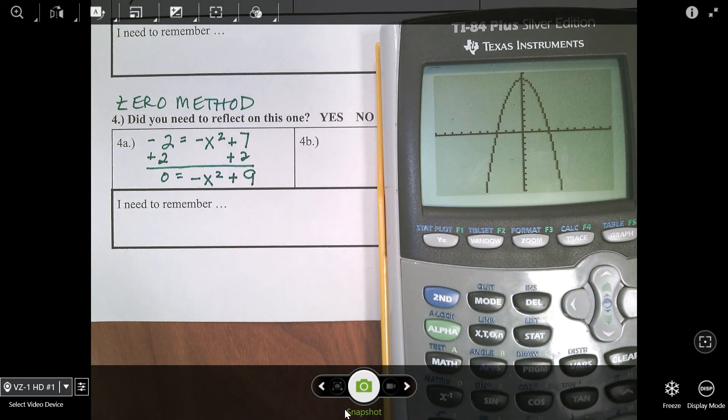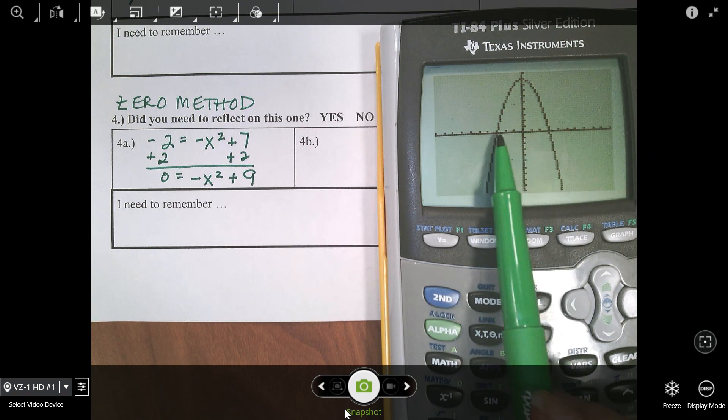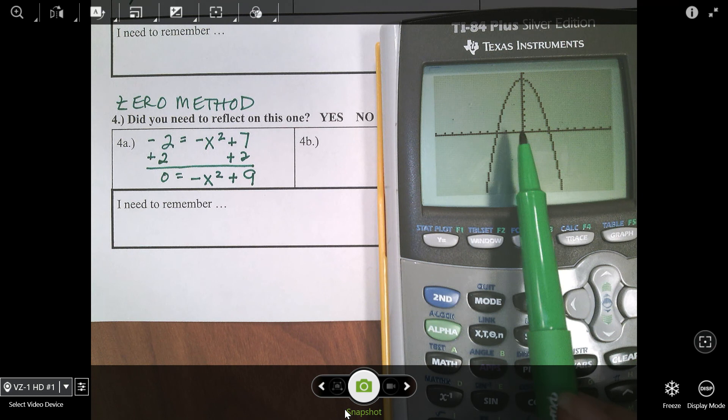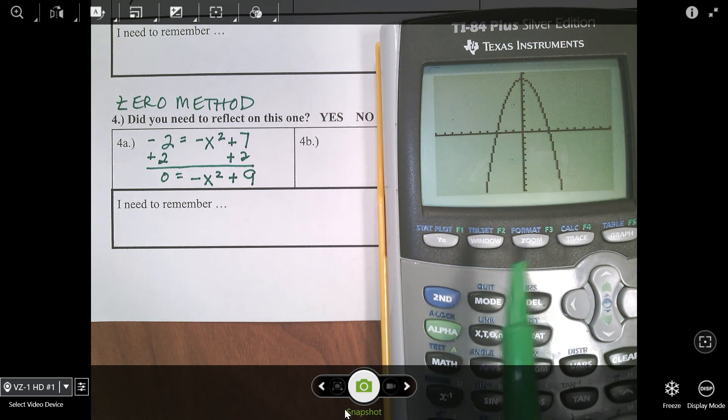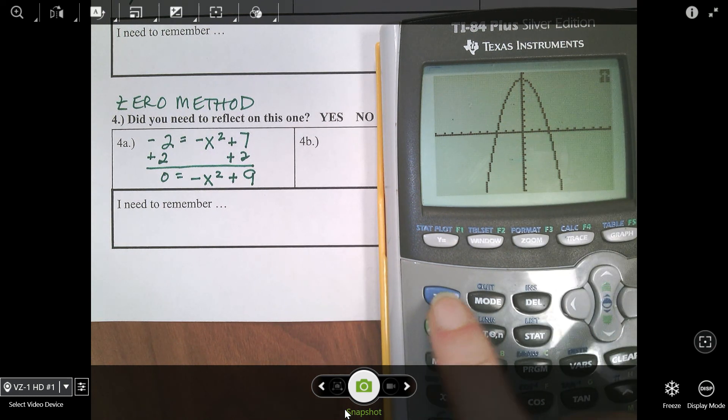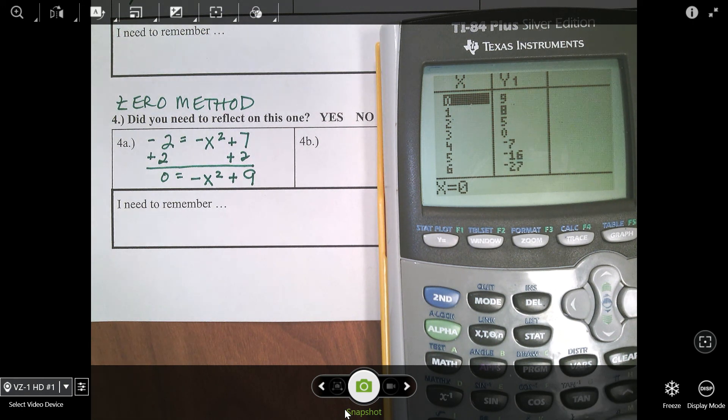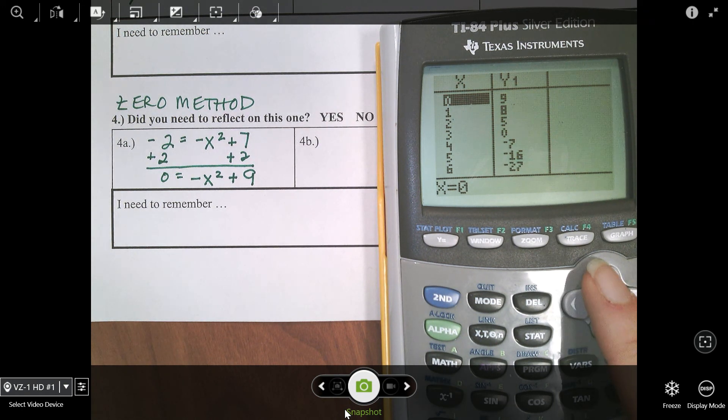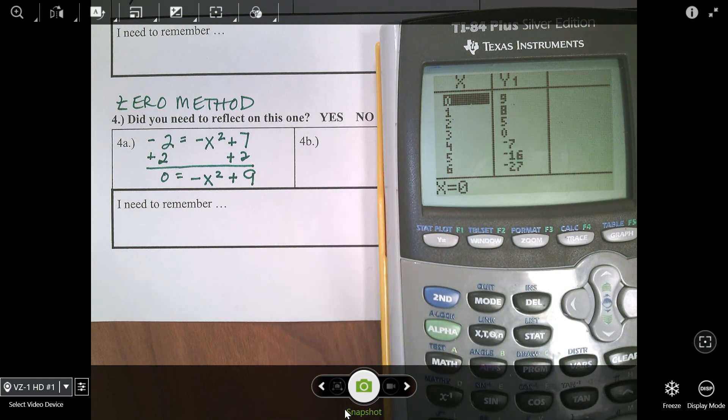Here's my graph. With zero method, I'm looking at the zeros, which are the same thing as the x-intercepts and the same thing as the solutions. Before I even do all those long steps with the second trace, I'm going to go to the table. Press second and graph - that takes me to the table. Remember, in the table, I'm looking for where my y value is zero and the x value that goes with it.